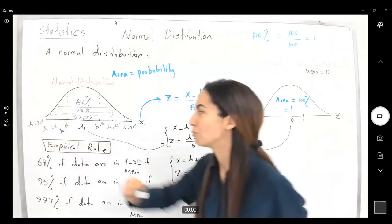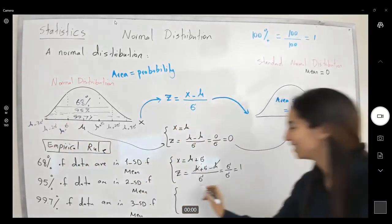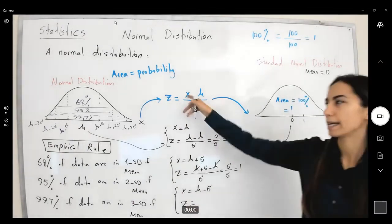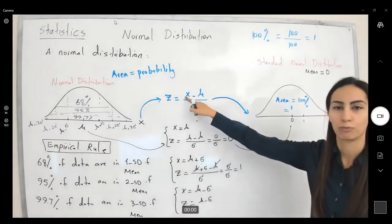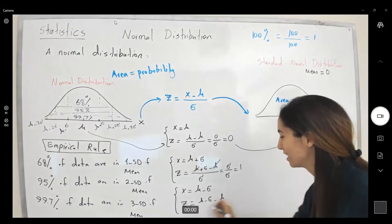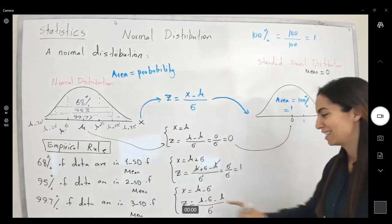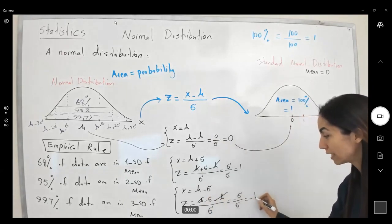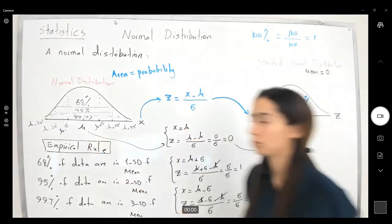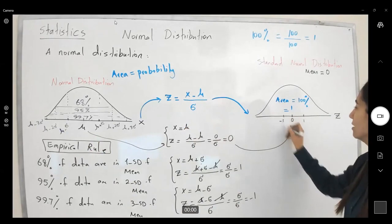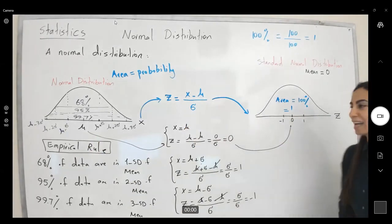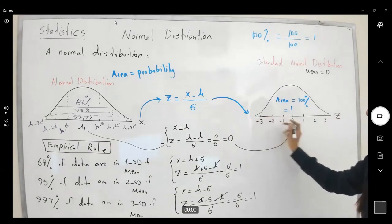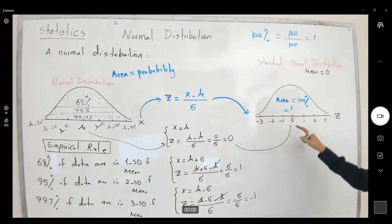Now take x equals mu minus sigma and calculate z. Plugging in: z equals (mu minus sigma) minus mu, divided by sigma. Mu and minus mu cancel out, leaving negative sigma divided by sigma, which equals negative one. So mu minus sigma converts to z equals negative one. You can convert the rest similarly: mu plus 2-sigma gives z equals two, mu minus 2-sigma gives z equals negative two, and so on.